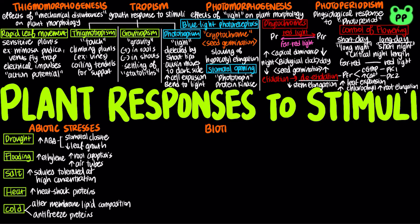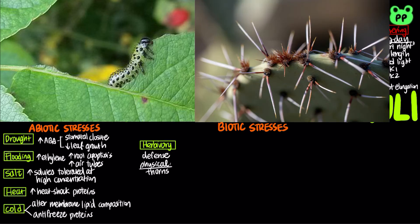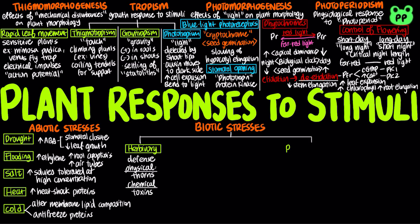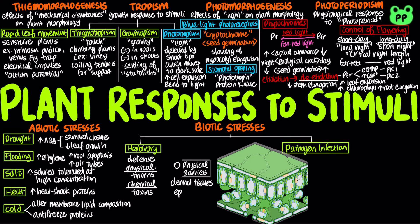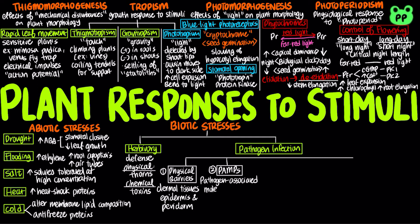Plants use defense systems against biotic stresses. Herbivory is a stress that plants face in any ecosystem. Plants counter excessive herbivory with physical defenses such as thorns, and chemical defenses such as distasteful or toxic compounds. Plants' first line of defense against pathogen infection involves the outer dermal tissues, including the epidermis and periderm. If a pathogen penetrates the dermal tissue, many plant receptors recognize its pathogen-associated molecular patterns, abbreviated as PAMPs, which are molecular sequences that are specific to certain pathogens.